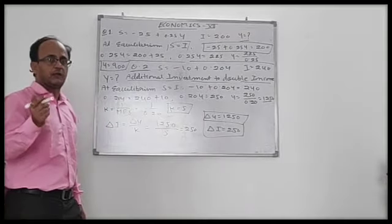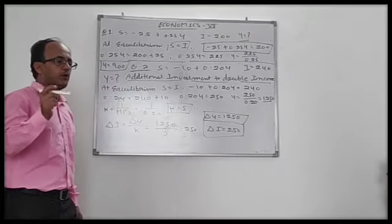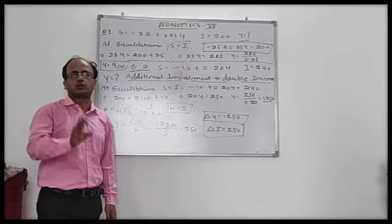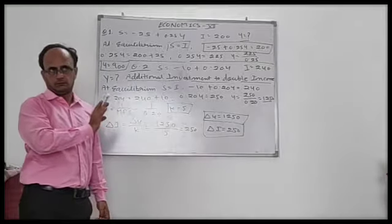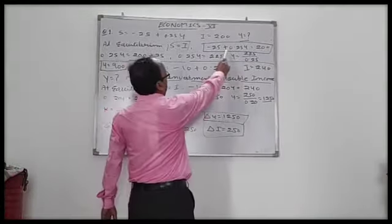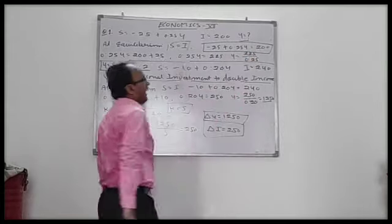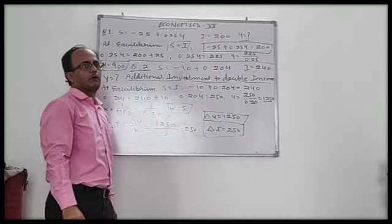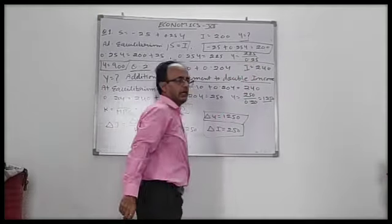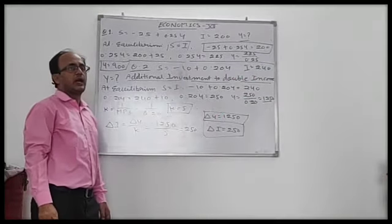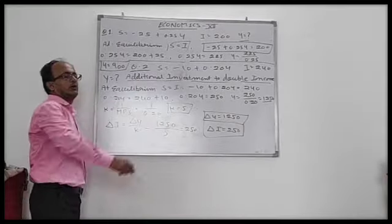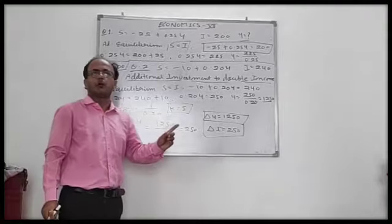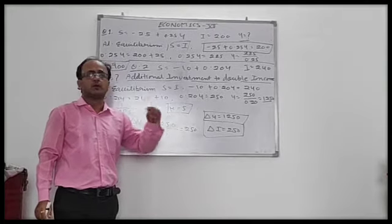So when the economy is in equilibrium, saving equals investment. We set minus 25 plus 0.25Y equal to 200 and solved for Y. The equilibrium level of income is 900 crore.